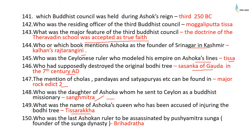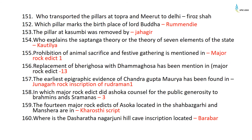The last Mauryan ruler, Brihadratha, was assassinated by Pushyamitra Shunga, the founder of the Shunga dynasty. The pillars at Topra and Meerut were transported to Delhi by Firoz Shah Tughlaq. The pillar at Rummindei marks the birthplace of Lord Buddha. The pillars at Kaushambi were removed by Jahangir. Kautilya explains the Saptanga theory, or theory of seven elements of the state. Prohibition of animal sacrifice and festive gathering is mentioned in Major Rock Edict 1. Replacement of Bherighosa with Dhammaghosa is mentioned in Major Rock Edict 13.